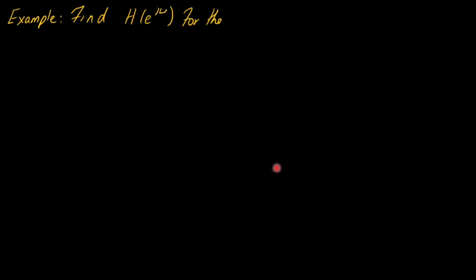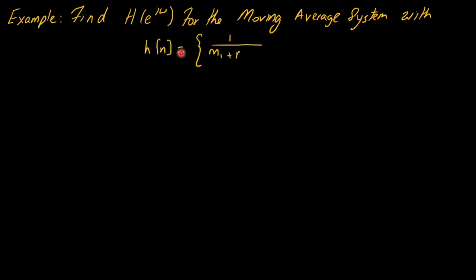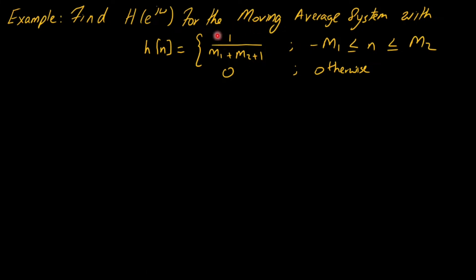For the discrete time frequency response, let us consider an interesting example of a moving average system. Its impulse response is 1 over (m1 + m2 + 1), valid when the integer n is between -m1 and m2, where m1 and m2 are positive integers. Since m1 can be greater than 0, the system is non-causal. We are asked to find the frequency response, that is, the discrete time Fourier transform of this impulse response.